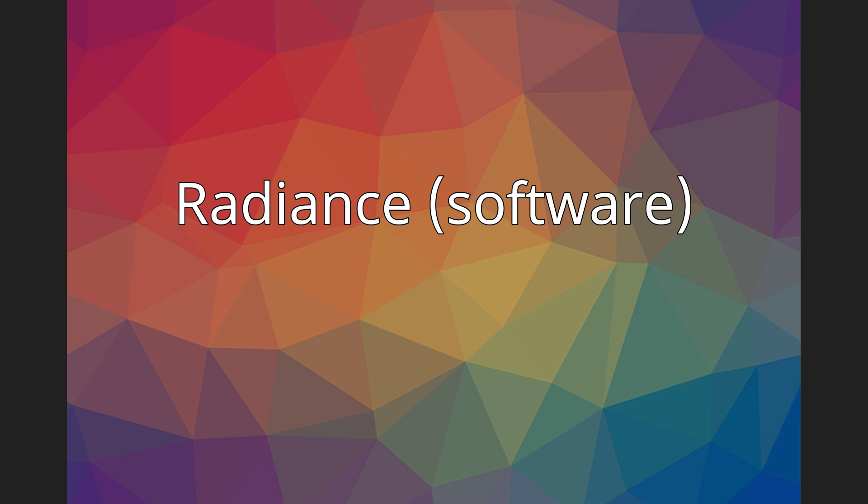Radiance is a suite of tools for performing lighting simulation, originally written by Greg Ward. It includes a renderer as well as many other tools for measuring the simulated light levels. It uses ray tracing to perform all lighting calculations, accelerated by the use of an Octree data structure.